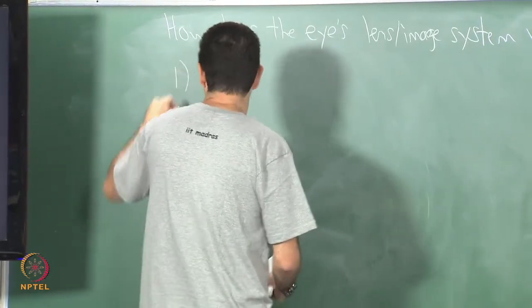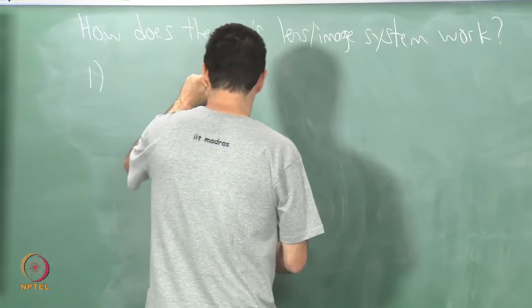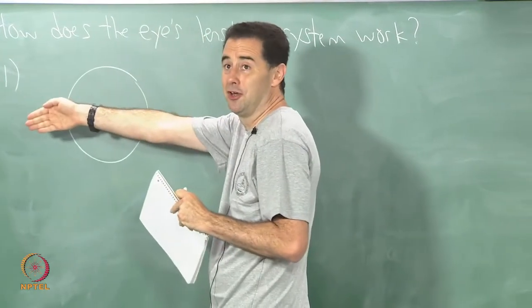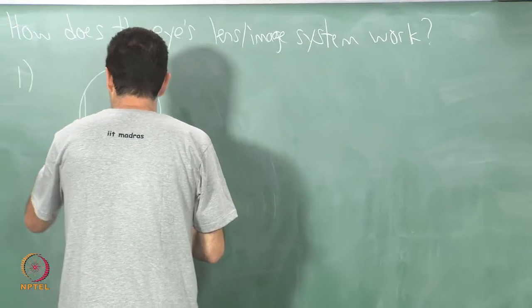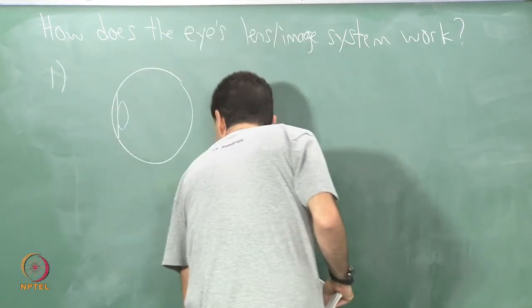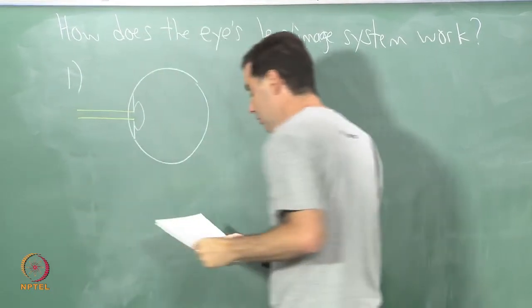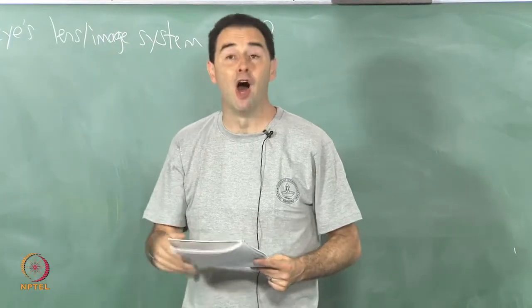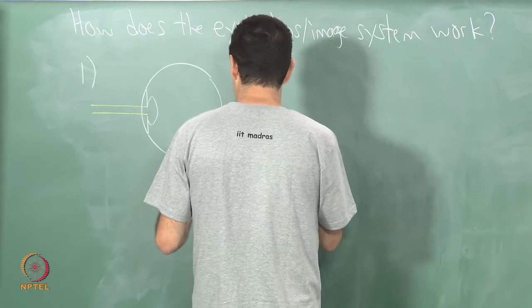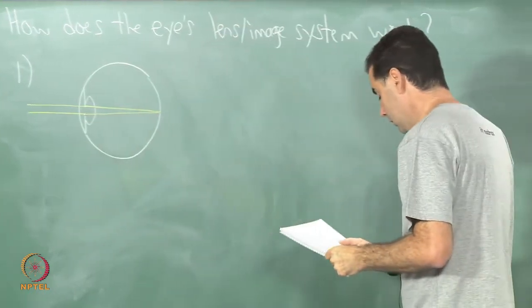I'm going to go over four different cases that occur very frequently. This is case one. I'll draw the eyeball as a simple circle here, but you can remember that it has more details from the picture. Mine is going to be rotated so that the eye is looking to the left. I'll make a very simple eye example here and put the lens here and I'll have some parallel rays coming in.